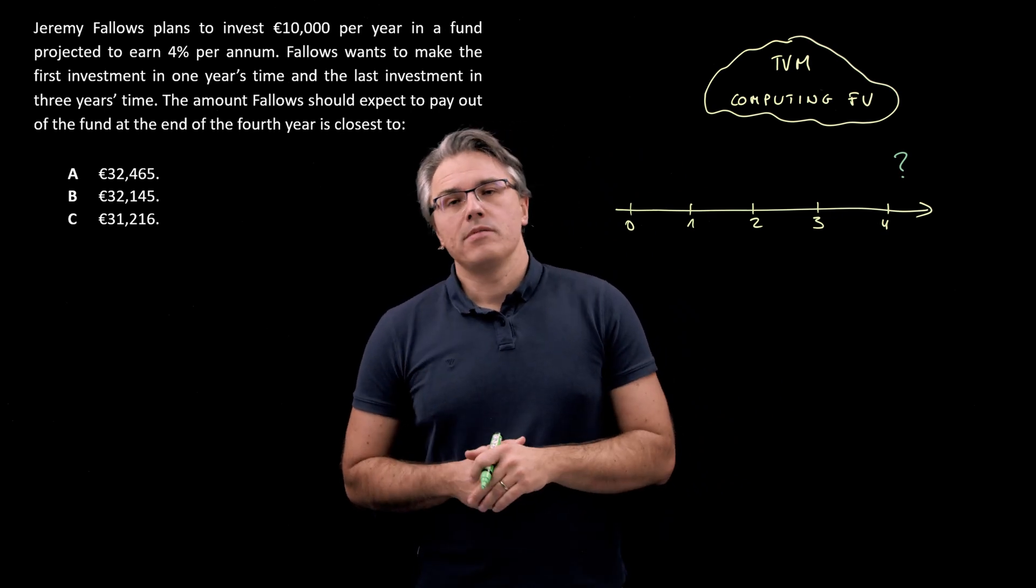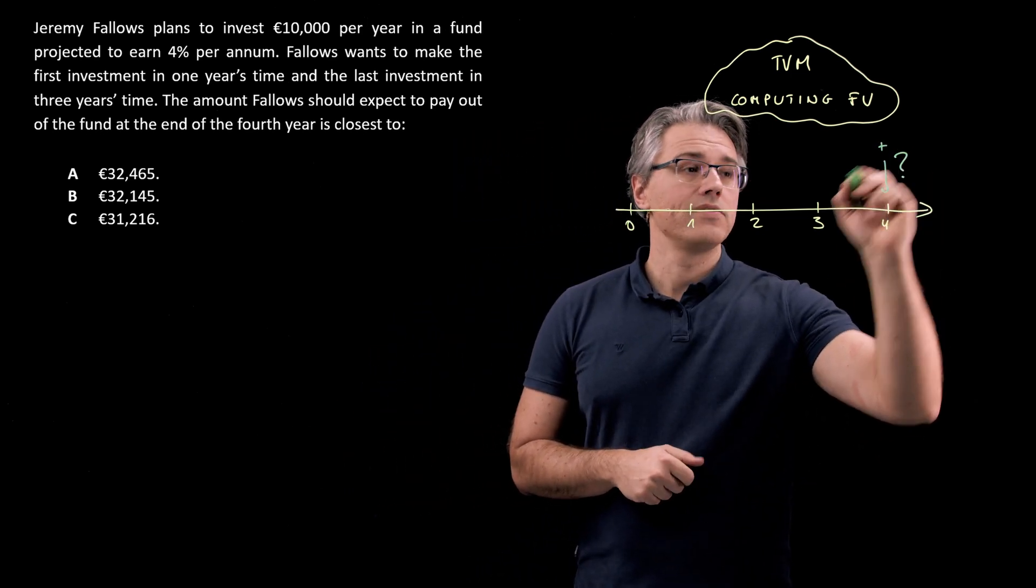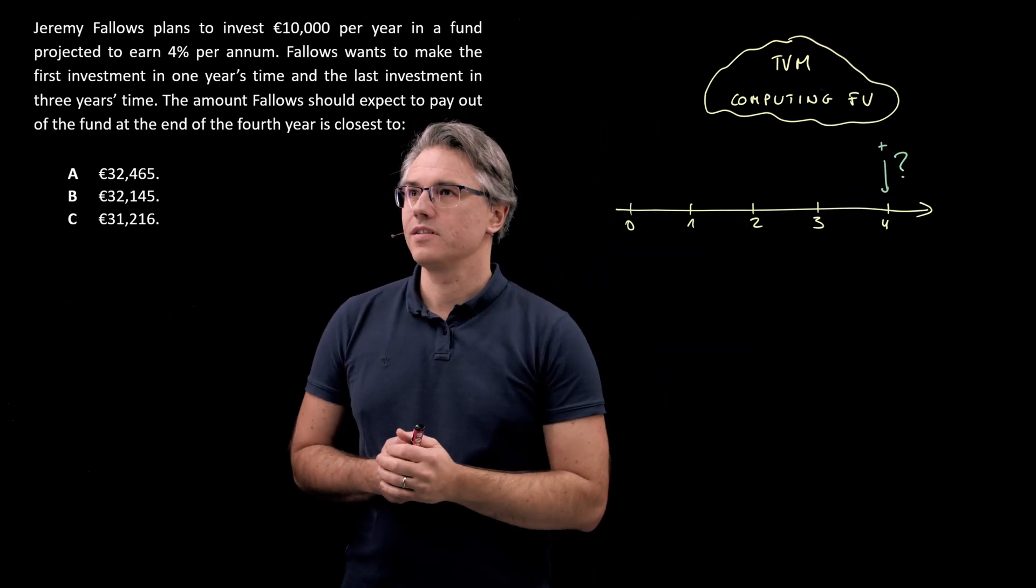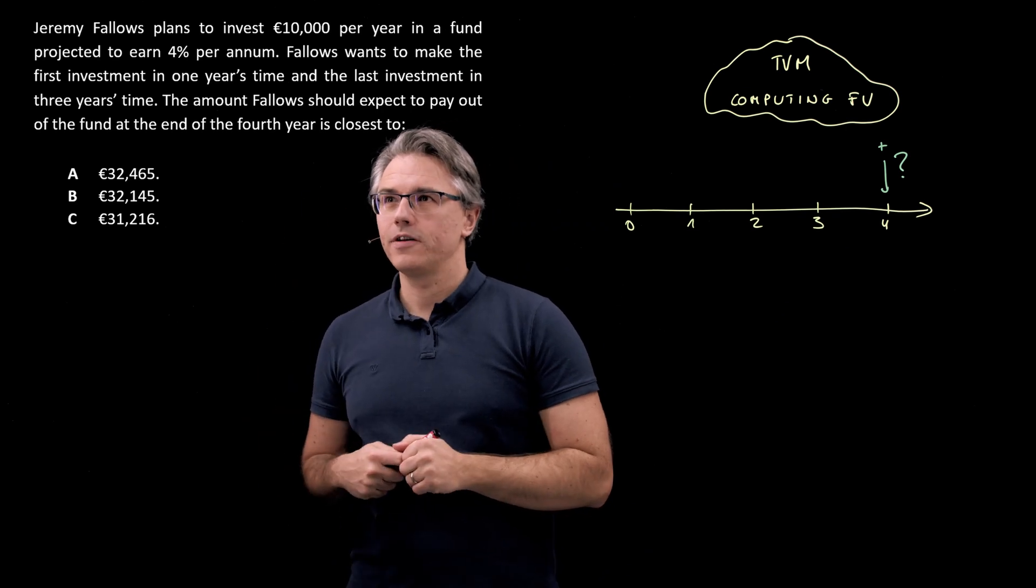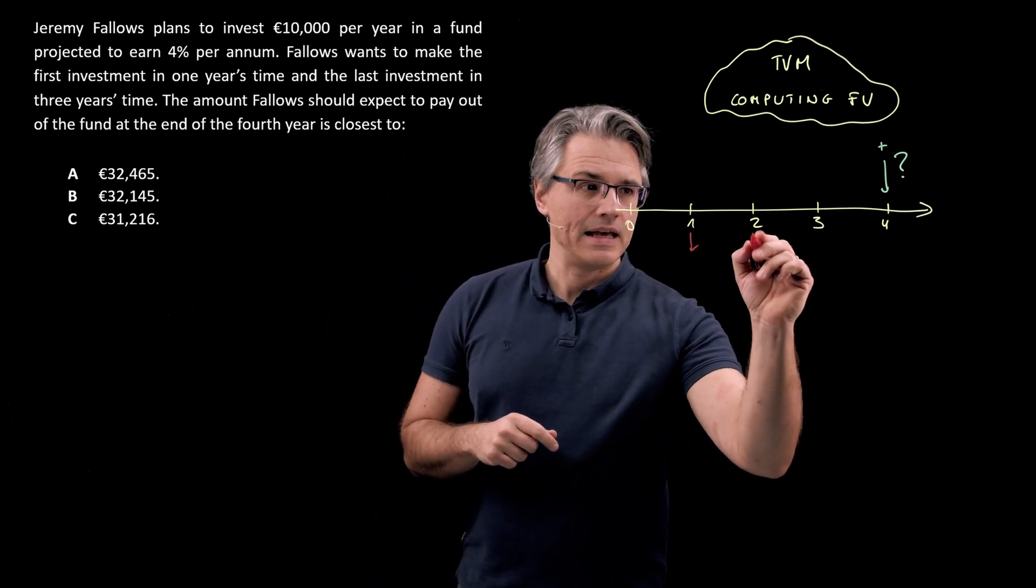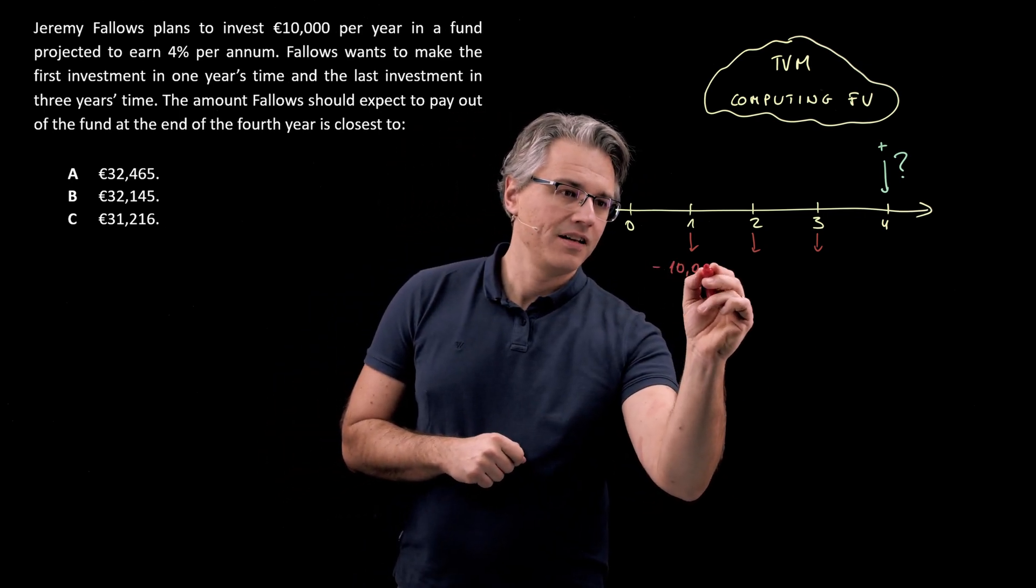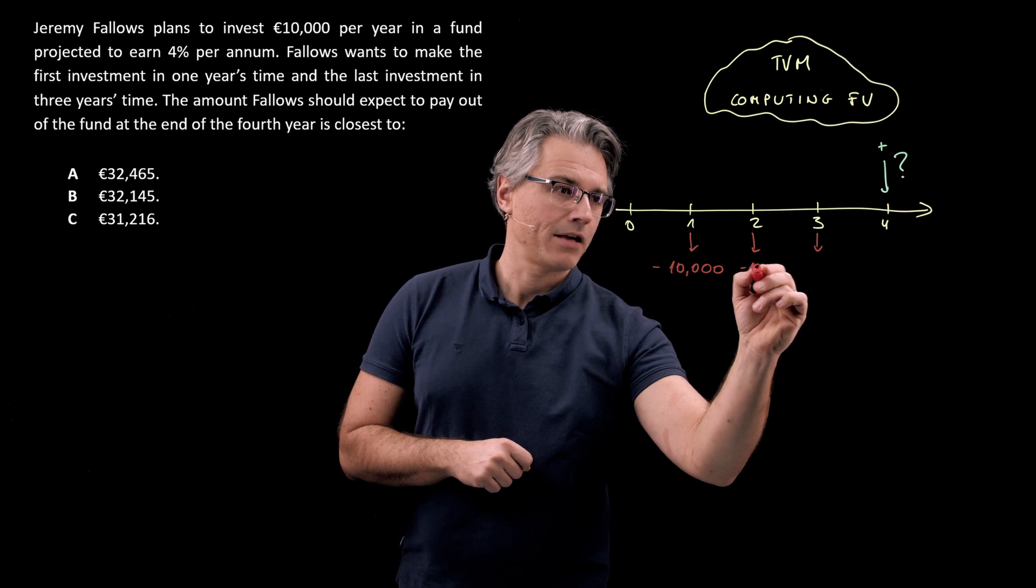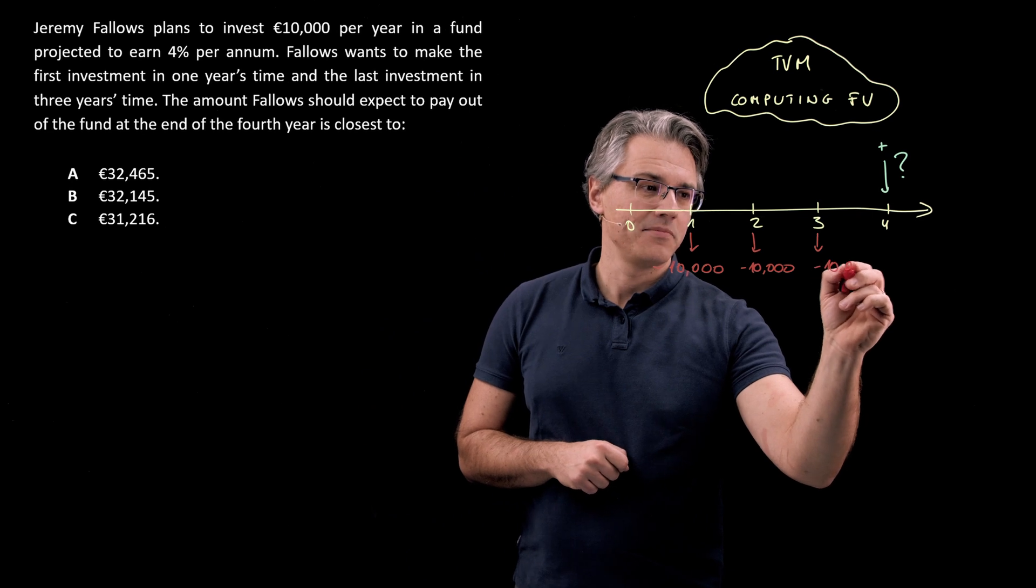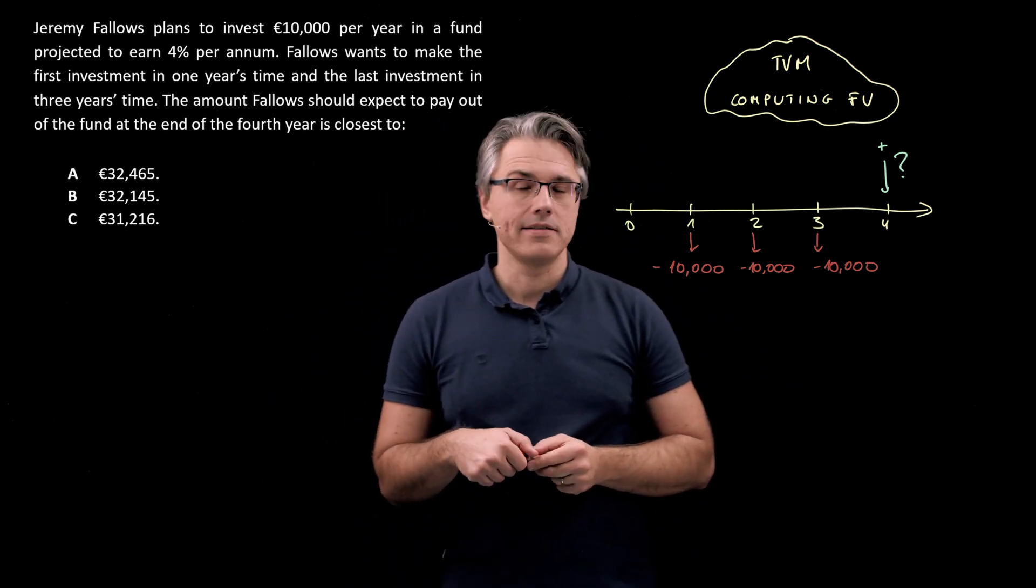In the convention that I've been applying to the other problems in this TVM series I'm going to make this a positive figure. So in order to figure out how much this is going to be we're going to use the info on the investments he's going to be making for the next three years and I'm going to show these as downward pointing arrows and actually a series of negative ten thousands. If this amount is supposed to be positive which he takes out in the end, these inputs are going to be into the account negative, so three minus ten thousands.